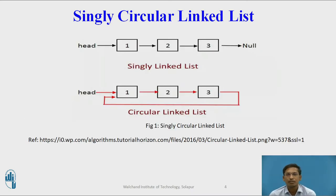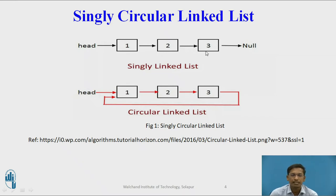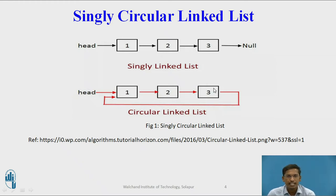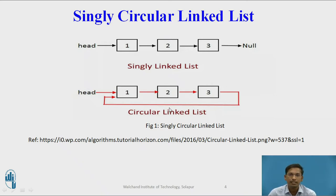This is the diagrammatic difference between a singly linked list and a singly circular linked list. In the first diagram, three nodes are present and head points to the first node. In a singly linked list, the last node's next part always has a null value. In a singly circular linked list, the last node's next part holds the address of head or the first node, making it circular.